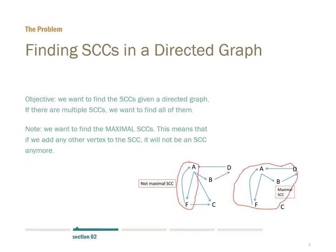What exactly do we want to find? We want to find SCCs in a directed graph, and if there are multiple SCCs, we want to find every one of them. Also note that we want to find the maximal SCCs — this means that if we add a new vertex to the current SCC, it shouldn't be an SCC anymore. For example, in the graph from our slides, ANF is indeed an SCC, but it's not a maximal one because if you add B and D to it, it is also an SCC. So in this graph, what we want to find is the set of two SCCs: AFBD, and also C, which is an SCC by itself.